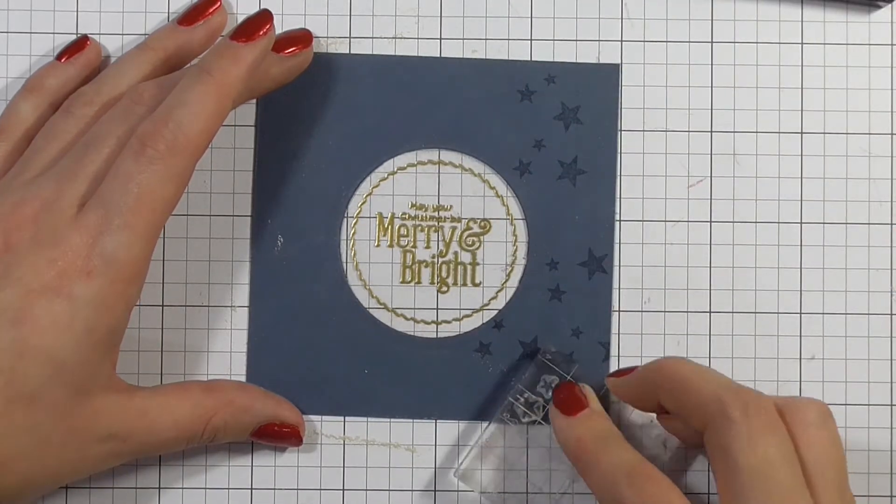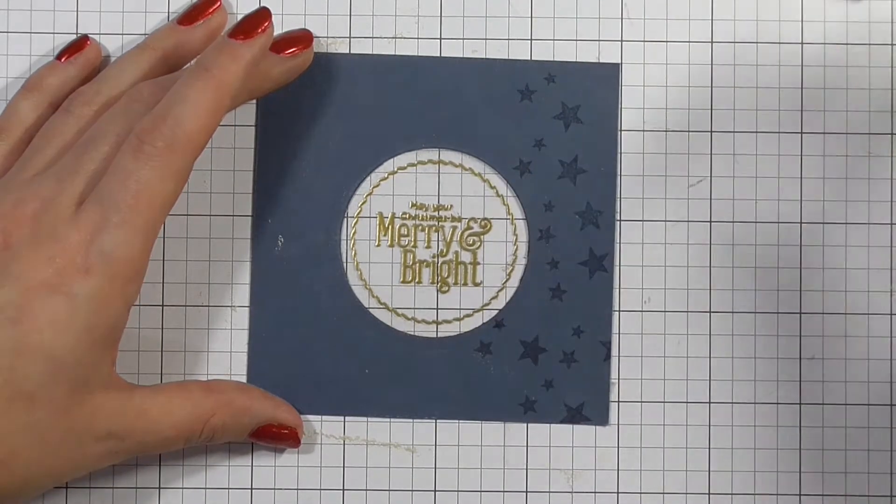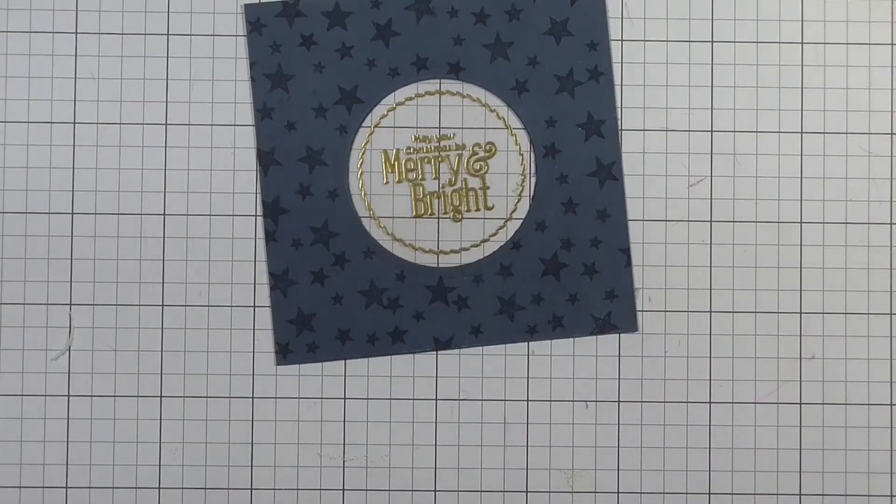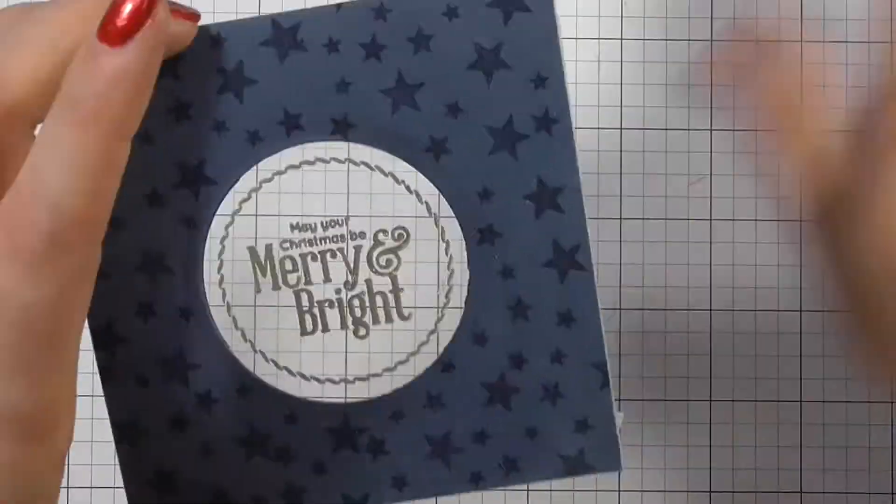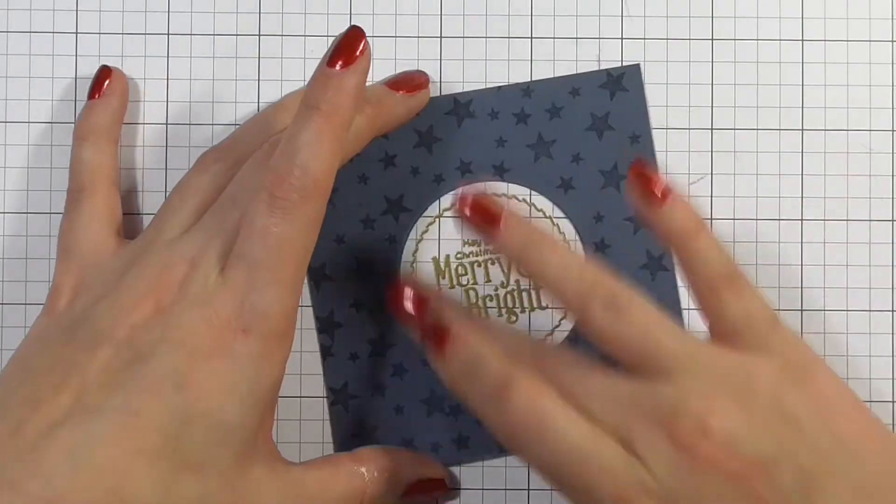So Versamark is actually not only great for embossing but it's actually a watermark ink, so it will sort of leave that pattern that's not just only showing up because the ink is wet.